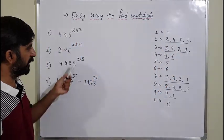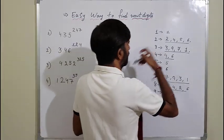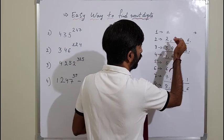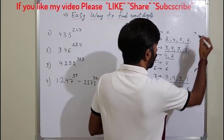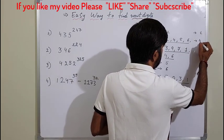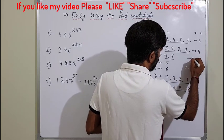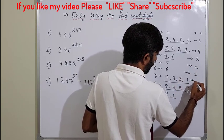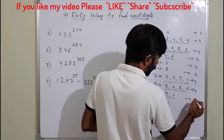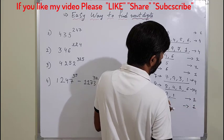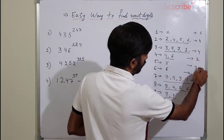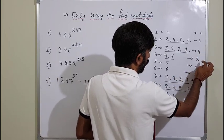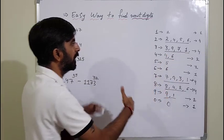Now, 1 is always repeated — only 1 possibility. For 2, there are 4 possibilities. For 3, 4 possibilities. For 4, 2 possibilities. For 5 and 6, only 1 possibility each. For 7 and 8, 4 possibilities. For 9, 2 possibilities. Remember: 1, 4, 4, 2, 1, 1, 4, 4, 2, 1 — this pattern you need to remember properly.